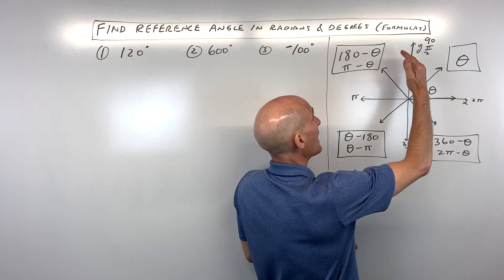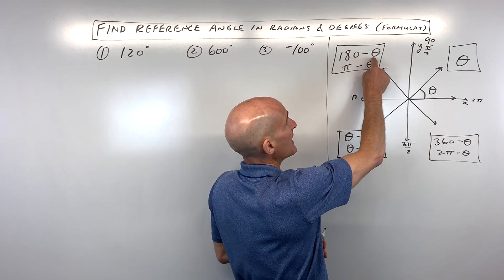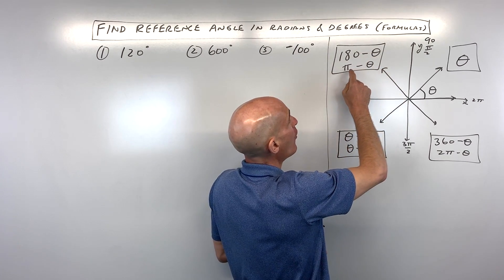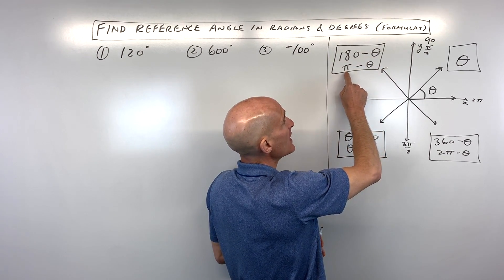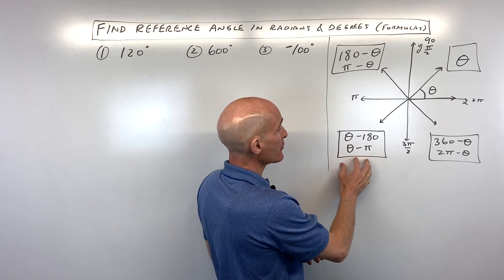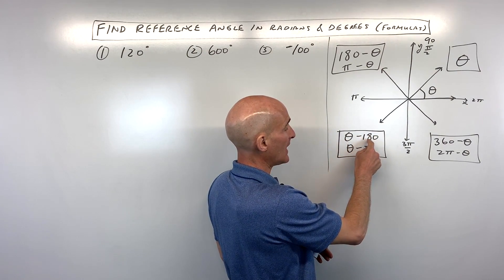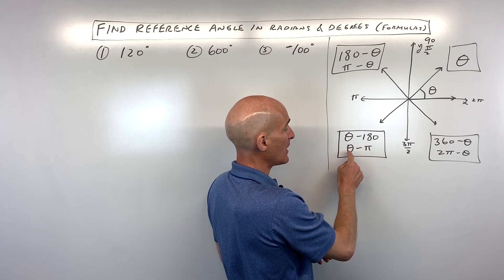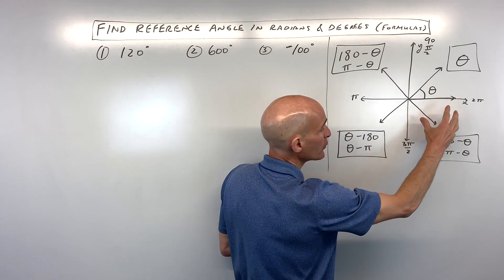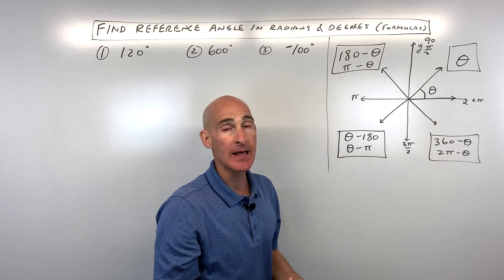If you end up in the second quadrant, you take 180 minus the angle to get your reference angle — or in radians, pi minus the angle. If you're in the third quadrant, you do the angle minus 180, or in radians, the angle minus pi. And if you end up in the fourth quadrant, you do 360 minus the angle, or two pi minus theta.